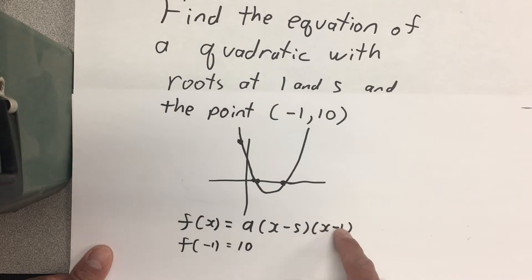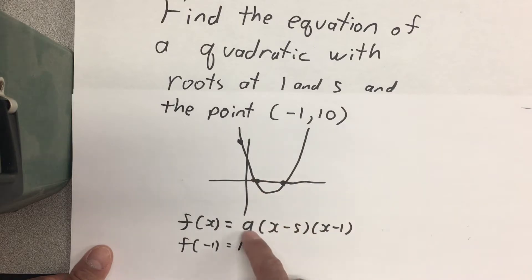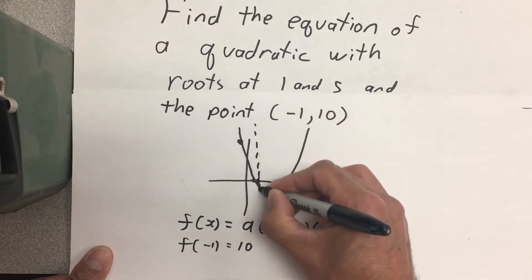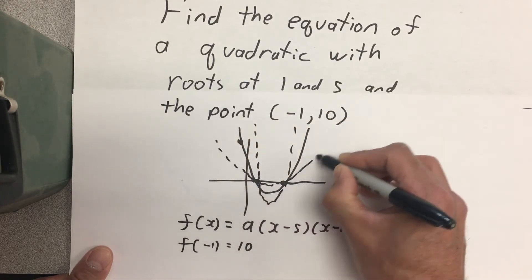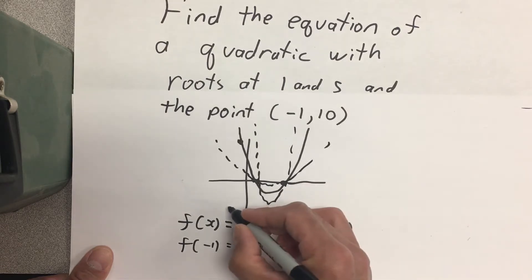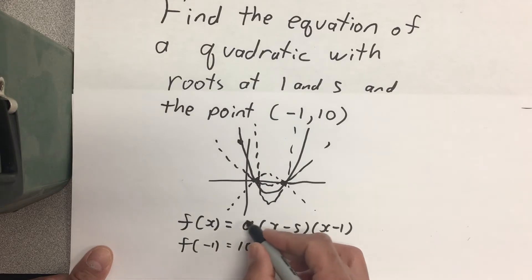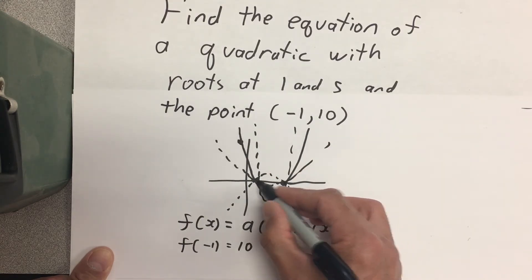Likewise, if x equals 1, 1 minus 1 is 0, bringing the whole thing down to 0, putting us here. I have an a in here. The reason why I have an a is there are many quadratic functions with these two roots. There's this steep one. There's this shallow one. There's this inverted one. The fact that this value is currently unknown allows for the fact that it could be any one of these quadratics that have roots at 1 and 5.